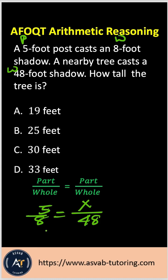If you cross multiply that, that gives you 8x equal to 48 times 5. 5 times 8 is 40, 0 carry 4, 5 times 4 is 20 plus 4 is 24.